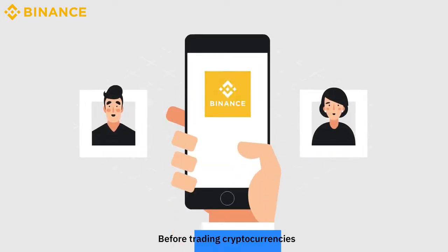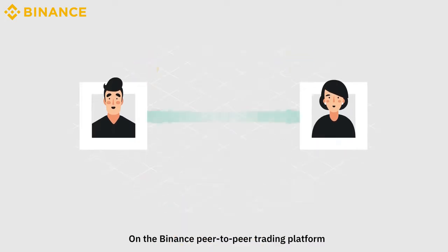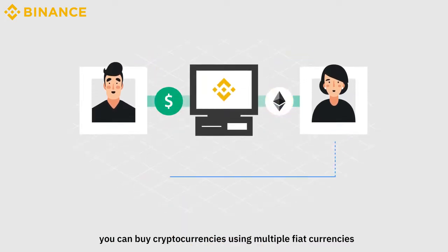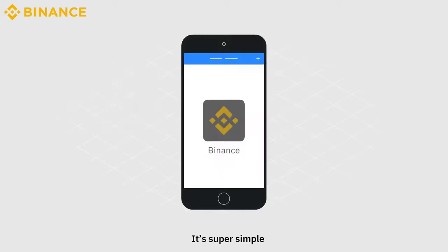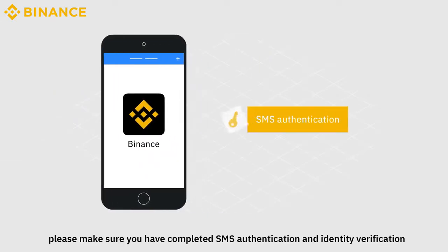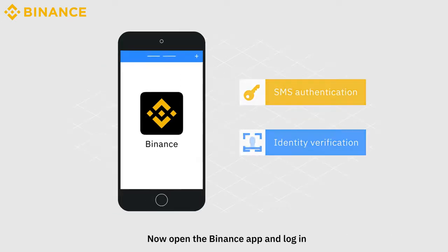Before trading cryptocurrencies, you need to buy cryptocurrencies first. On the Binance peer-to-peer trading platform, you can buy cryptocurrencies using multiple fiat currencies and various payment methods. It's super simple. Before we start, please make sure you have completed SMS authentication and identity verification.